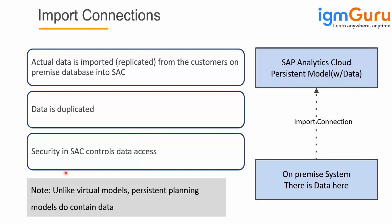Unlike virtual models, here the data is stored. We mainly use import connections for planning scenarios, as planning does not support live connections as of now. If you need a planning scenario, you must use import connections. Also, in scenarios where customers are not satisfied with performance — for example, if a dashboard on live connection takes five to ten seconds or even a minute to show data — live connection might not be feasible and customers may switch to import connections.